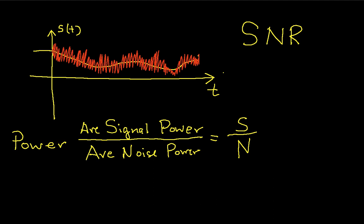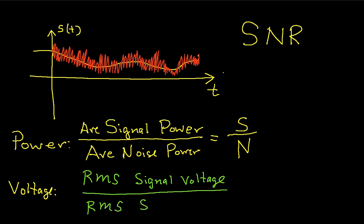Sometimes we want to talk about our noise and our signal in terms of voltage rather than power. So we may have a voltage SNR, where this is defined as the RMS, the root mean squared signal voltage, divided by the RMS noise voltage.